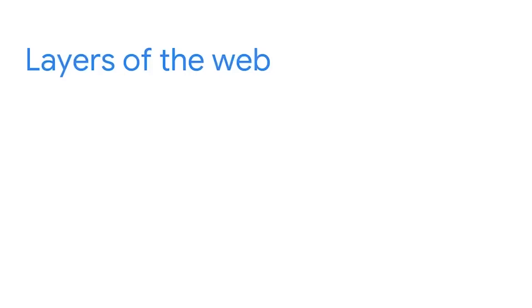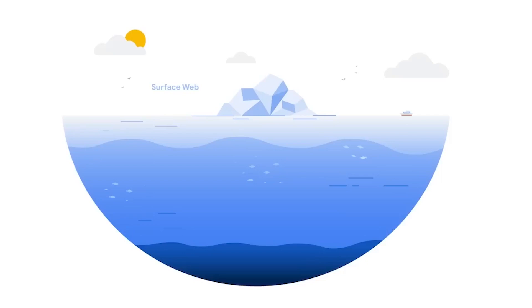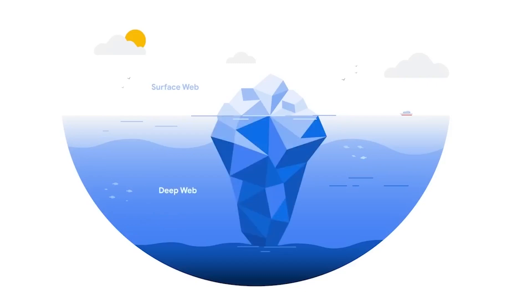While many people use search engines to navigate social media or shop online, this is only a small part of what the web really is. The web is actually an interlinked network of online content made up of three layers: the surface web, the deep web, and the dark web. The surface web is the layer most people use, containing content accessible using a web browser. The deep web generally requires authorization to access — an organization's intranet is an example. The dark web can only be accessed using special software and carries a negative connotation, since it is the preferred web layer for criminals because of the secrecy it provides.